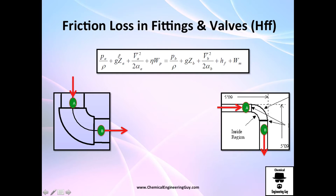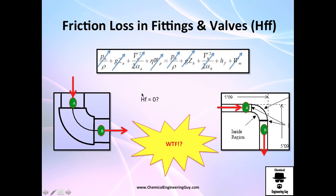One day a student asked me: imagine we do an energy balance on an elbow between point A and point B. There's no significant pressure drop, the height is negligible, there's no pump or turbine, and the velocity is the same on both sides because the diameters are equal. So how do you get a non-zero HF value?